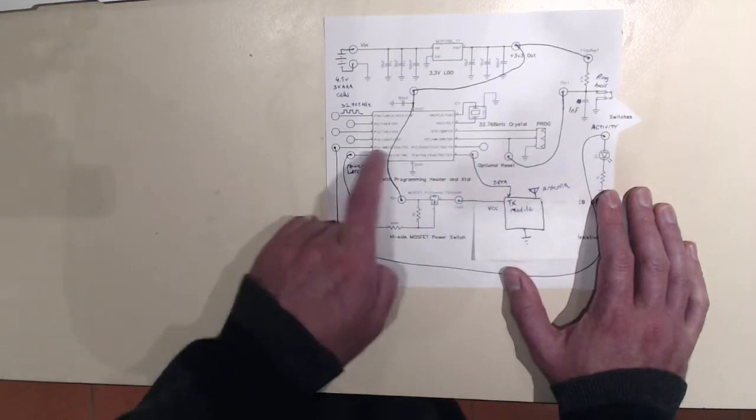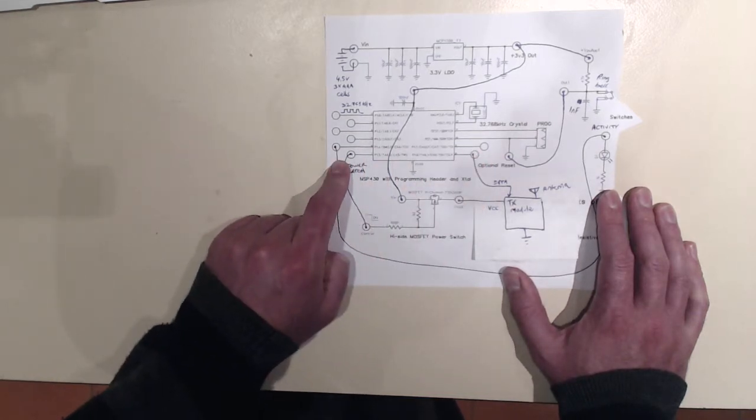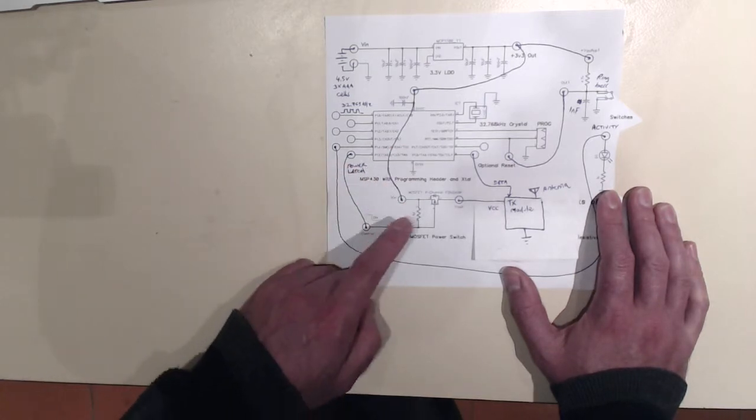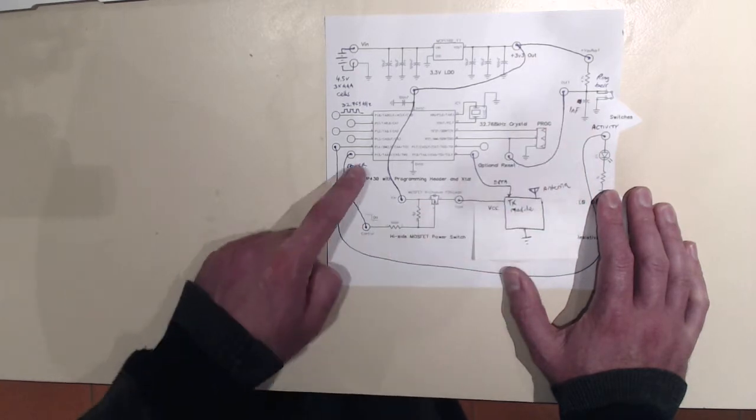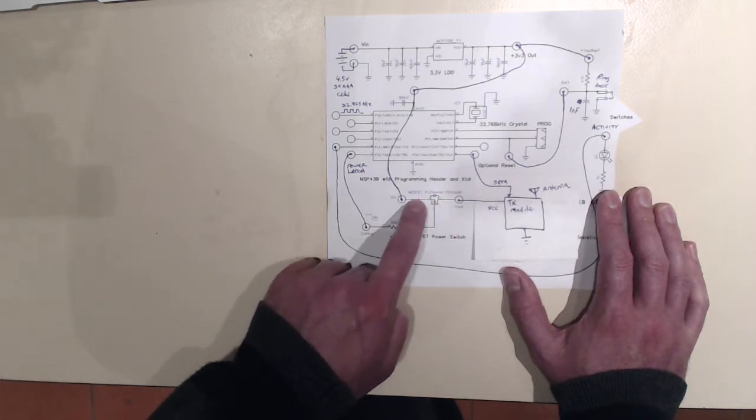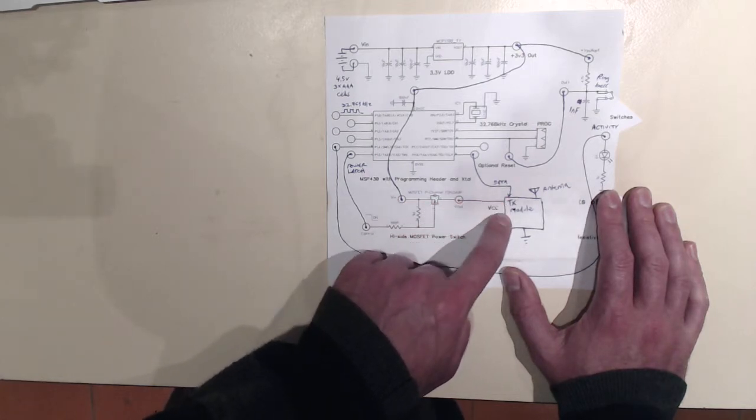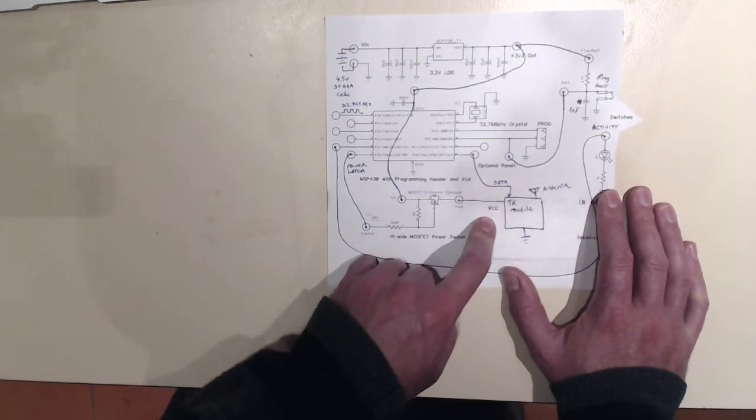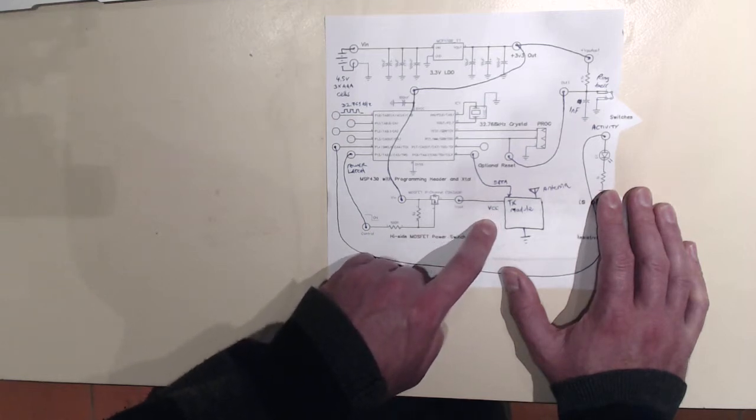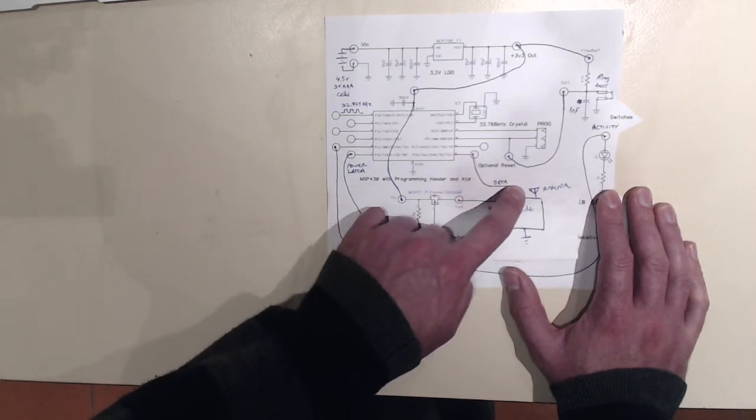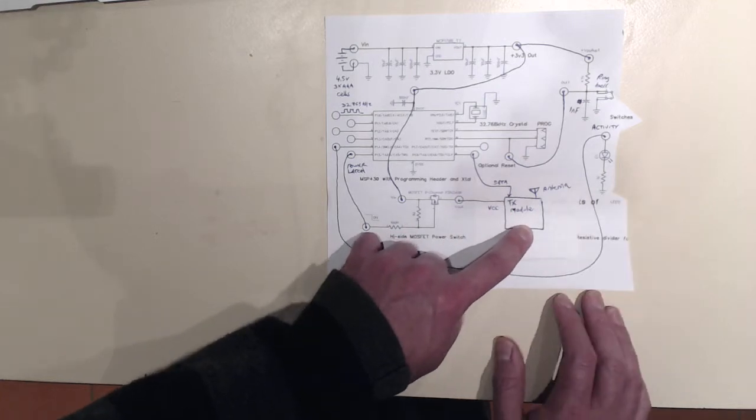Now there are three outputs that are used on the MSP430G2211. So when that button is pressed, the first thing it does is to pull this power latch output low. And that switches on this P-channel MOSFET that then provides 3.3 volts to the transmitter module. After the voltage rails here have had a little chance to stabilize, so 100 milliseconds or so have passed, the MSP430 code writes a little bit of data to this output pin here. And that's fed to the transmitter module and the transmitter module sends that packet.